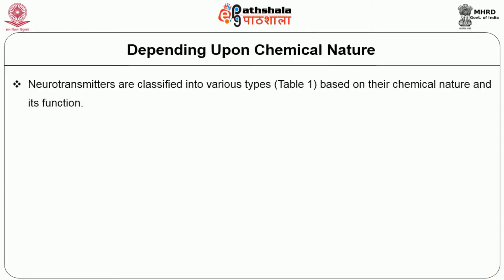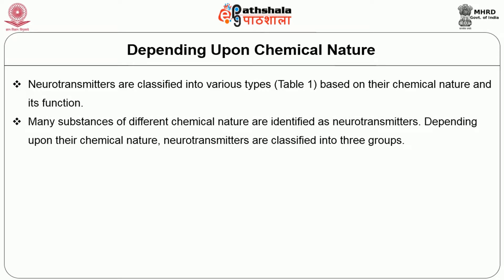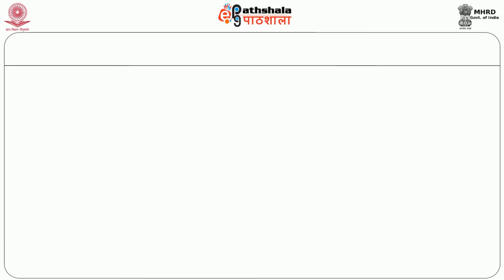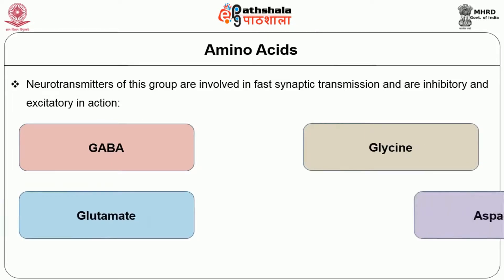Now coming to classification. Neurotransmitters can be classified into various types based on their chemical nature and function, as clearly illustrated in Table 1. Depending upon their chemical nature, they can be classified into three groups. The first group is amino acids — neurotransmitters of this group are involved in fast synaptic transmission and are both inhibitory and excitatory in action. GABA (gamma-aminobutyric acid), glycine, glutamate, and aspartate belong to this group.